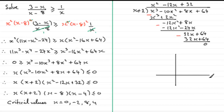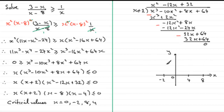Setting up axes, the critical values are where the graph crosses the x-axis: minus 2, 0, 4, and 8 (not drawn to scale). The function is a positive quartic, which has a W-type shape. So the graph comes down through minus 2, up through the origin, down through 4, and back up through 8.